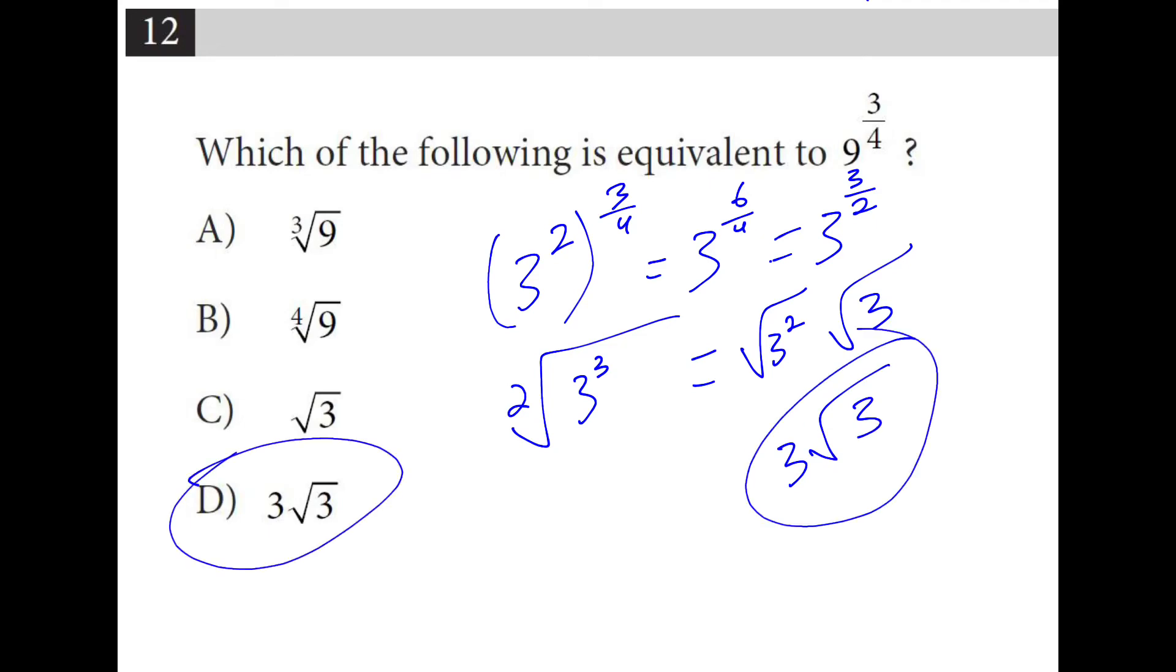So in other words, when you find a perfect square underneath the radical that it's a factor, you can pull it out. And that's what we do here.